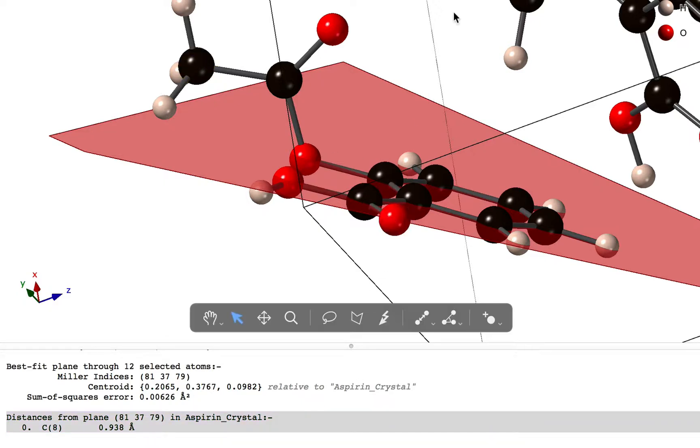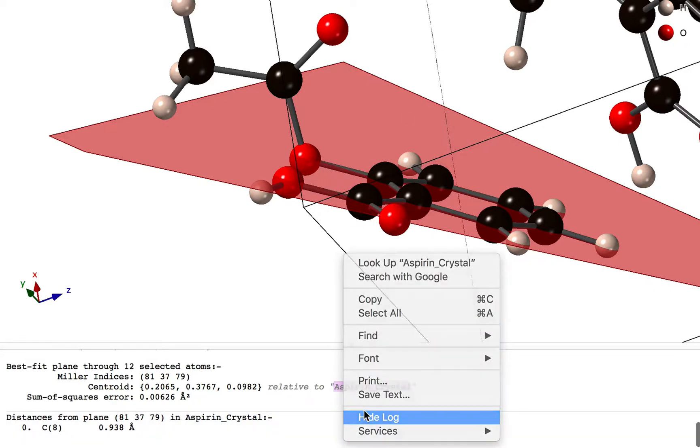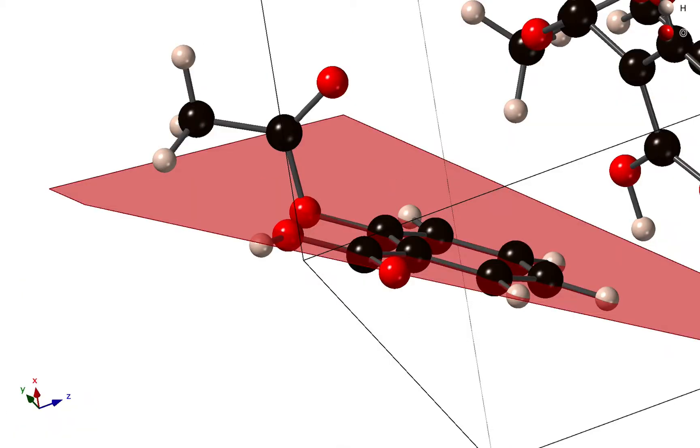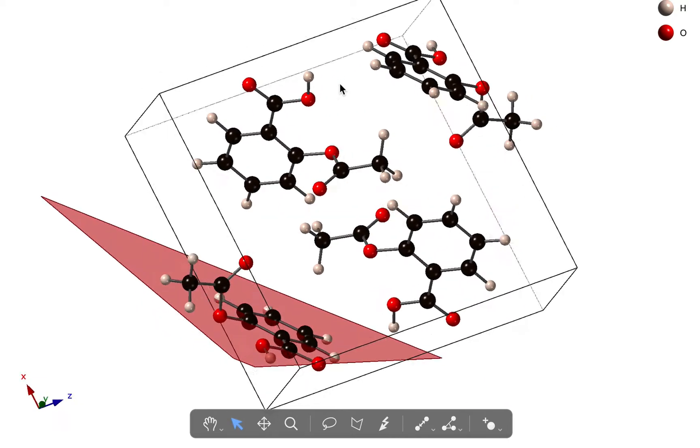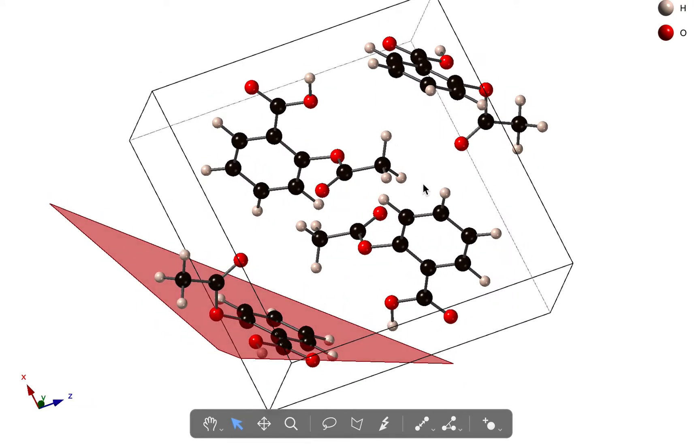So the next thing we might want to do is hide the log for the moment, and we might want to measure the angle between two separate molecules. So let's take the first molecule that had a ring fitted through it. Let's take this molecule over here and we might want to measure the best fit plane through this molecule.